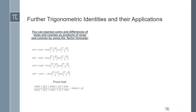Prove that [sine(x+2y) + sine(x+y) + sine(x)] / [cos(x+2y) + cos(x+y) + cos(x)] equals tan(x+y). Since tan is sine over cosine, we have sine(x+y) and cos(x+y) in the question, and what we hope to do is make everything else vanish. Questions like this are best handled by dealing with the numerator and denominator separately. In the numerator we have sine(x+2y) + sine(x+y) + sine(x); let's set aside sine(x+y) for the moment and focus on sine(x+2y) + sine(x).